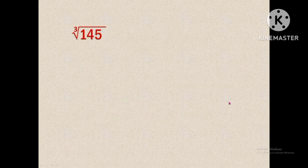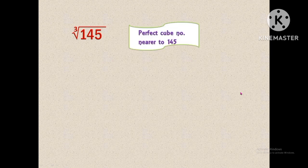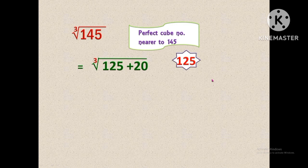Now we are going to find the cubic root for the number 145. First we have to find the perfect cube number nearer to 145, which is 125, because 5 cubed is equal to 125. Next, we are going to rewrite 145 as 125 plus 20, because 125 plus 20 is equal to 145. We then find the cubic root for the perfect cube number 125, which is 5.